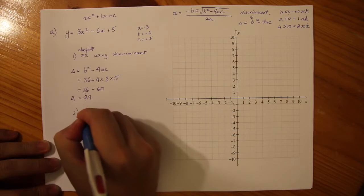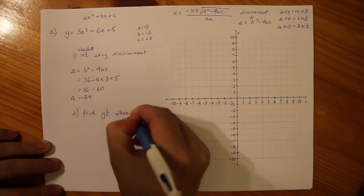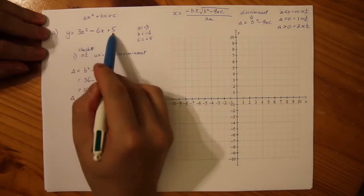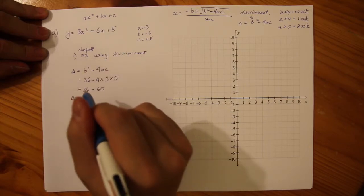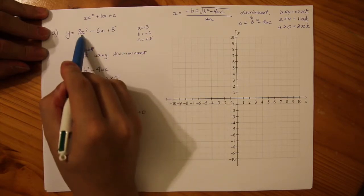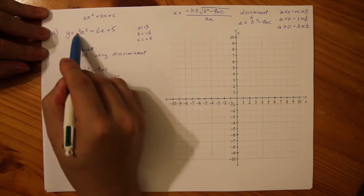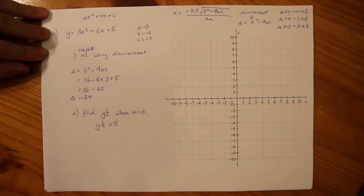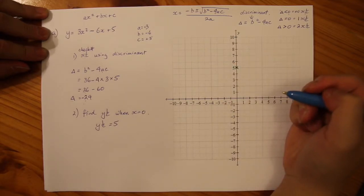The next step is to find the Y intercept when X equals 0. That's always an easy one because it's always going to be the last value — whatever C is will be your Y intercept. Because X equals 0, the first two terms eliminate, and our Y intercept is 5. Let's plot that on our graph — there's 5, that is our Y intercept.